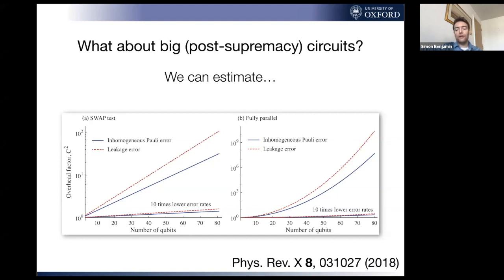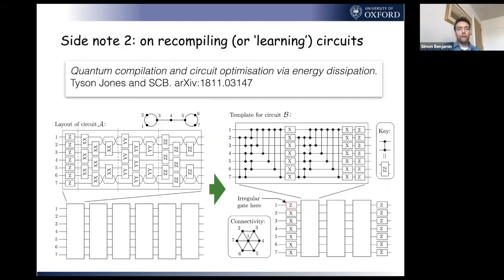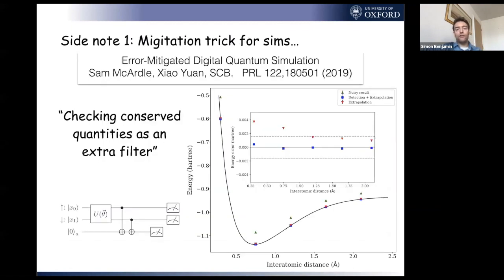In order to get the thing to perform the way it would if it were error free, we need something like 10 to the eight or 10 to the nine times as many operations, which is probably a deal breaker unless your system is incredibly fast. However, the lower lines still look pretty good. That's if we can get 10 times lower error rates than the ones that we have in good iron traps these days. So perhaps not impossible to achieve that error mitigation can give us value out of these early machines.